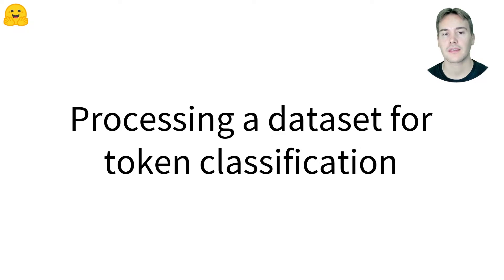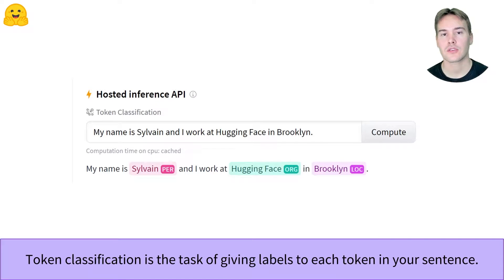Let's study how to preprocess a dataset for token classification. Token classification regroups any task that can be framed as labeling each word or token in a sentence, like identifying the persons, organizations, and locations, for instance.